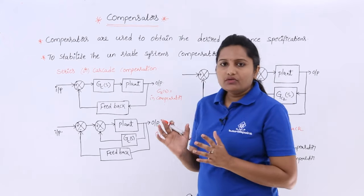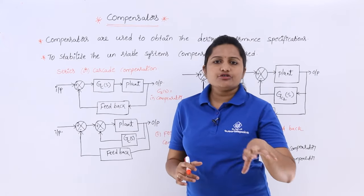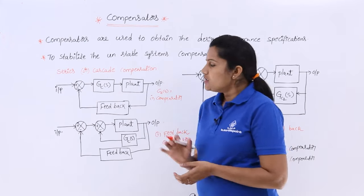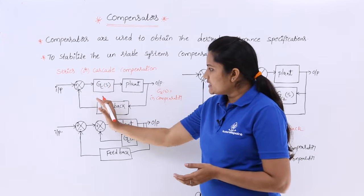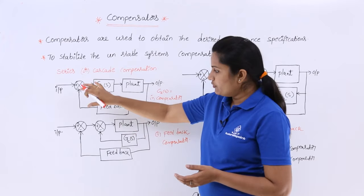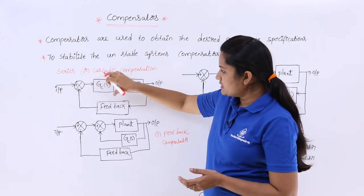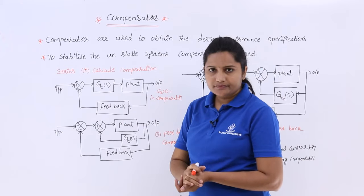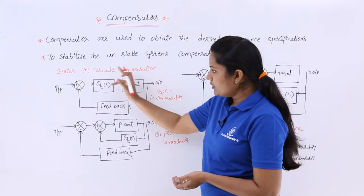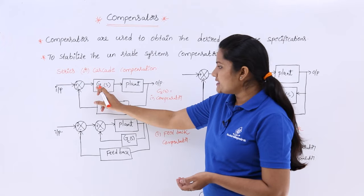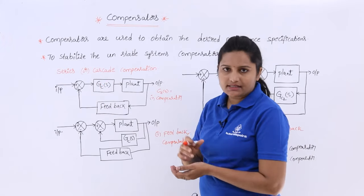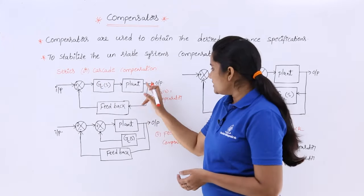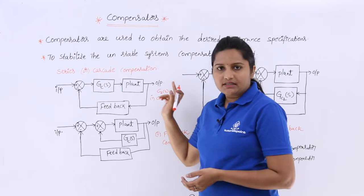How in a control system are we going to use these compensators? Where are we going to use them? For example, if this is a control system, you are having a forward loop gain and a feedback. Now, here I am adding a compensator in cascade to the regular gain. This is called a cascade compensator.